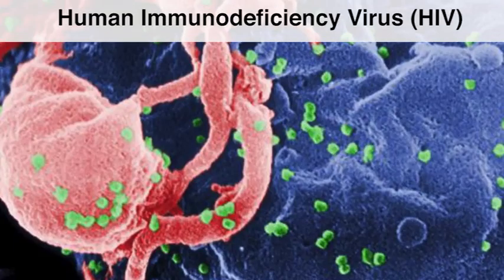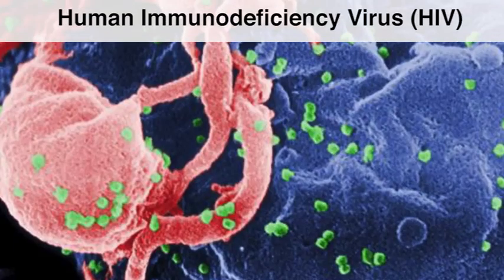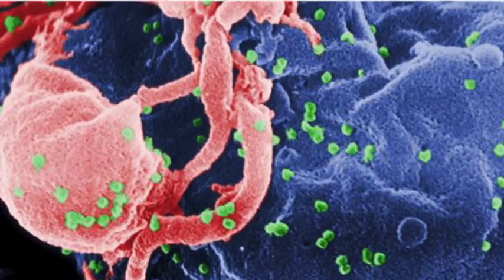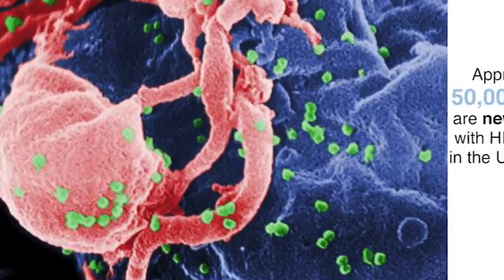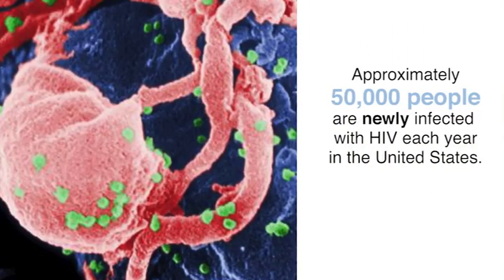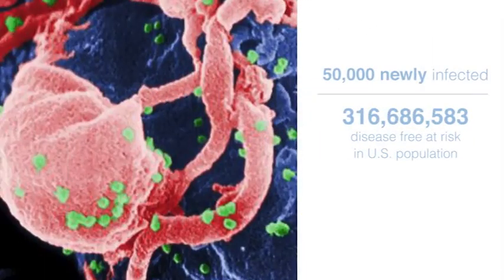Human immunodeficiency virus, or HIV, is a retrovirus that causes acquired immunodeficiency syndrome, or AIDS. Infection with HIV gradually destroys the immune system, which makes it harder for the body to fight infections. Approximately 50,000 people are newly infected with HIV each year in the United States. Dividing the number of newly infected people by the at-risk population yields a statistic which is an example of risk.